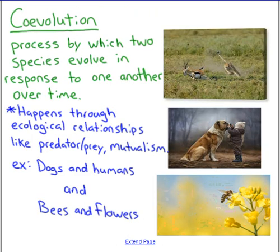Finally, coevolution is a process by which two species evolve in response to one another. This happens through ecological relationships — two examples would be predator and prey, and mutualism. With predator and prey, like the cheetah and the gazelle, if the cheetah becomes faster, the gazelle needs to adapt or they'll go extinct. The fast gazelles get passed on to the next generation, and the cheetahs may become faster too. It's a feedback loop — one evolves in response to the other.